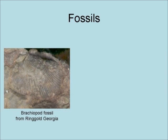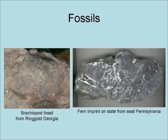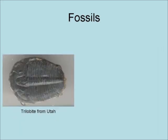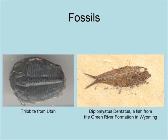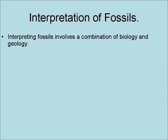This is a brachiopod fossil found in Ringgold, Georgia. This is a fern imprint on slate that is found in East Pennsylvania. This is a trilobite fossil found in Utah. This is a fossil fish in the Green River Formation in Wyoming.